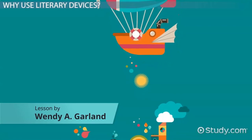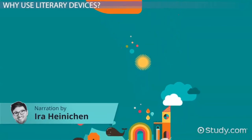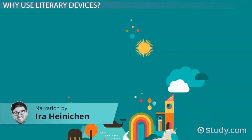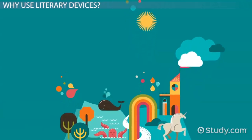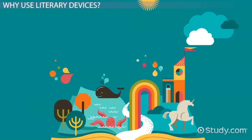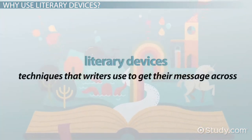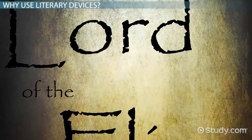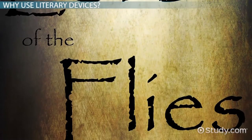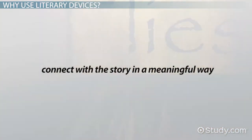Have you ever wondered what makes a good story? How do authors tell a story that is interesting and compelling to read? One way is to use different literary devices to emotionally connect the reader to the story. Literary devices are techniques that writers use to get their message across. In Lord of the Flies, William Golding uses several literary devices to help the reader connect with the story in a meaningful way.